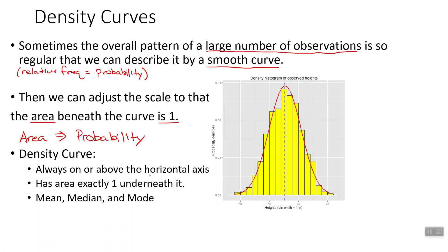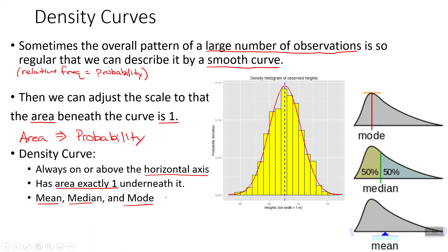Some things about density curves: they are always on or above the horizontal axis — they never go negative, always above zero. The area is always exactly one — we just figure out what the area is and divide by that. And we can almost always find the mean, the median, and the mode fairly easily, which we'll take a look at on the next slide.